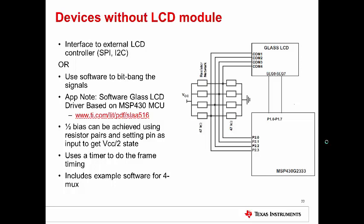Or you can use software to bitbang the signals out, but typically this is only with a very small display, as the software is complex. There is an app note on bitbanging the signals called Software Glass LCD Driver based on MSP430. This is available on TI.com. The methodology for this example achieves half bias by using resistor pairs and setting the pin as an input in order to get the VCC over 2 state. It uses a timer module within the device to do frame timing, and there is example software included with the app note for 4Mux.